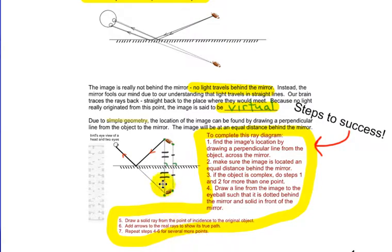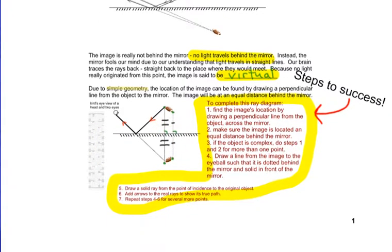Add arrows to the real rays to show its true path. Arrow, arrow. And then repeat this for several other points if you need to. That's really how you do it.